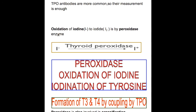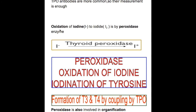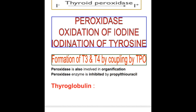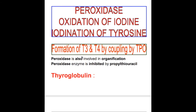What's the function of thyroid peroxidase? In the follicular cell, thyroid peroxidase is responsible for oxidation of iodide to iodine. Number two, it's responsible for iodination of the tyrosine. Iodination of tyrosine occurs in the follicle, and oxidation occurs in the follicular cells.